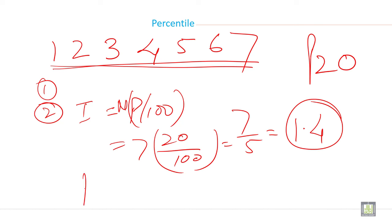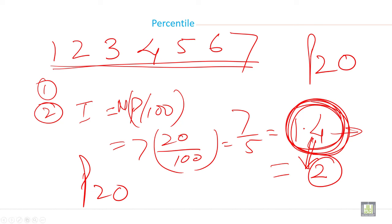So for p 20, is i a whole number or decimal number? This is a decimal number. So the rule is round it up to the next number. When you round it up to next number it will become 2. So second position in the data set, this one will become your p 20. So p 20 is 2 in your data set.